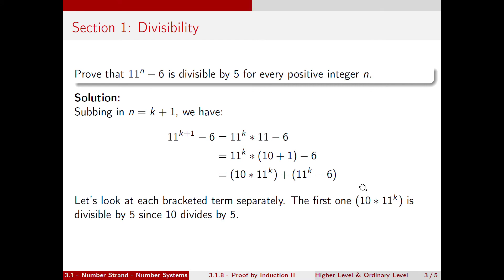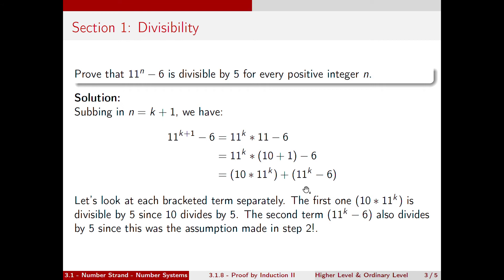Looking at each bracketed term: the first term, 10 times 11 to the k, is divisible by 5 since 10 is divisible by 5 — 5 goes into 10 two times. The second bracket, 11 to the k minus 6, is also divisible by 5 based on our inductive assumption that it is true for n equal to k. Therefore, the whole expression is indeed divisible by 5.